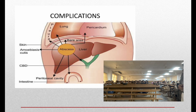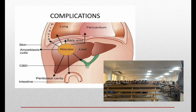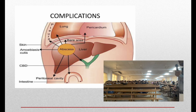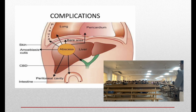The major complication of liver abscess is perforation. The abscess may perforate into the lung, pericardium, or peritoneal cavity. It may go into the common bile duct producing cholangitis, or into the intestine causing perforation. So there are multiple adjacent areas where the abscess can perforate and produce complications.